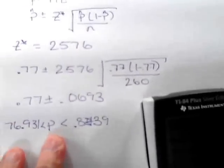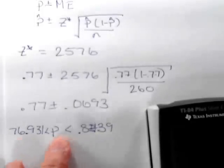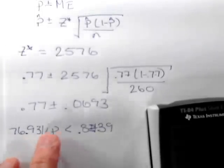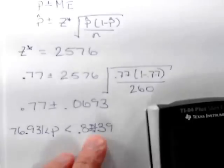With 99% confidence, the population proportion is between 76.931% and 83.839%.